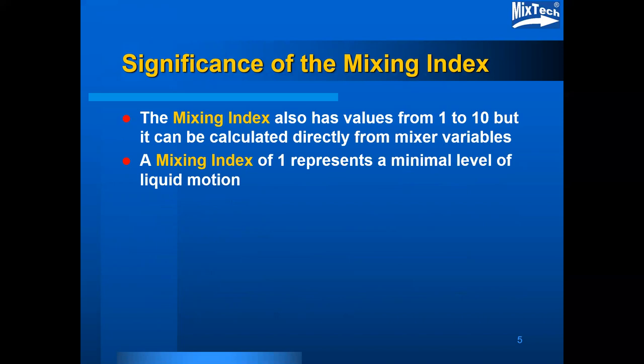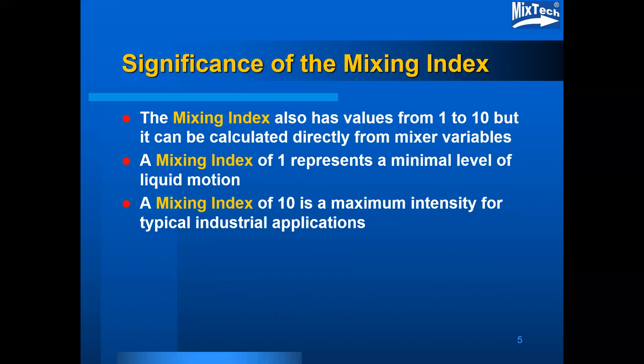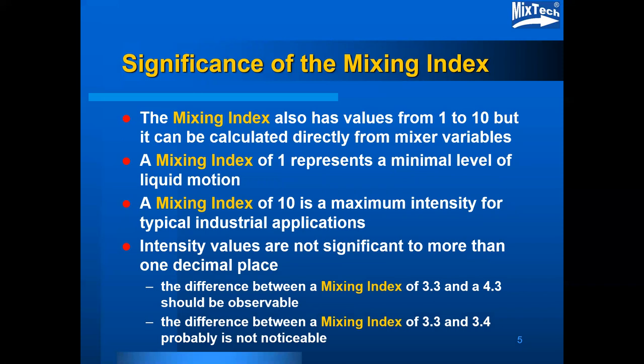A mixing index of 1 represents a minimal level of liquid motion. A mixing index of 10 is a maximum intensity typical of industrial applications, and the intensity values are not significant to more than one decimal point. The difference between a mixing index of 3.3 and 4.3 should be observable, whereas the difference between a mixing index of 3.3 and 3.4 probably is not noticeable.